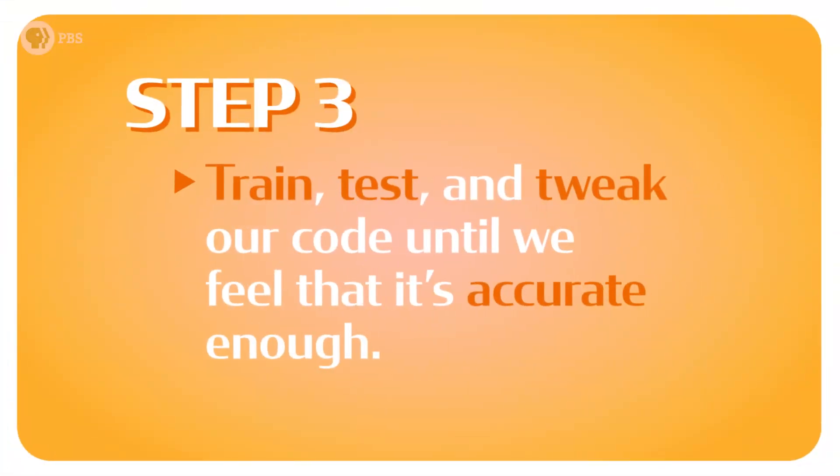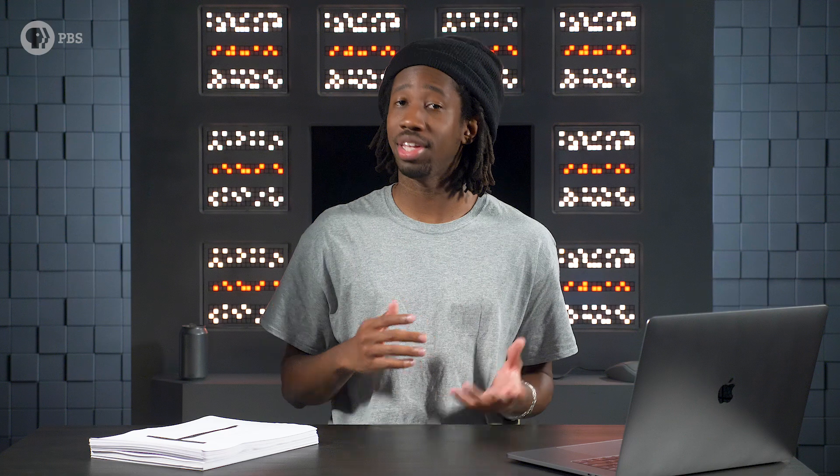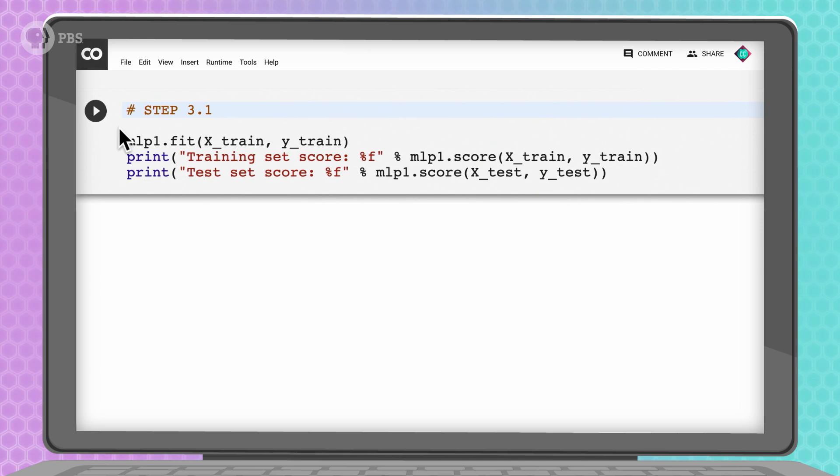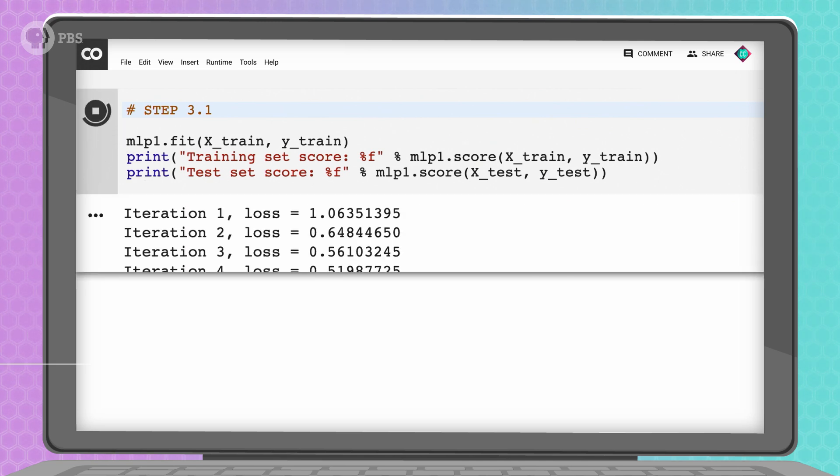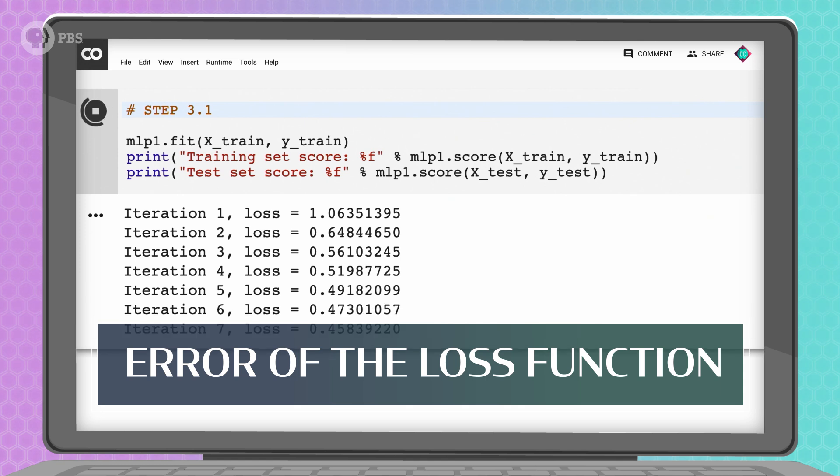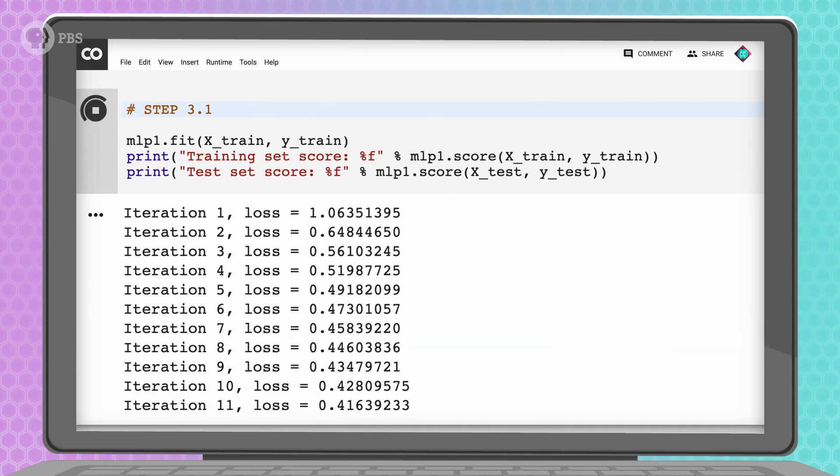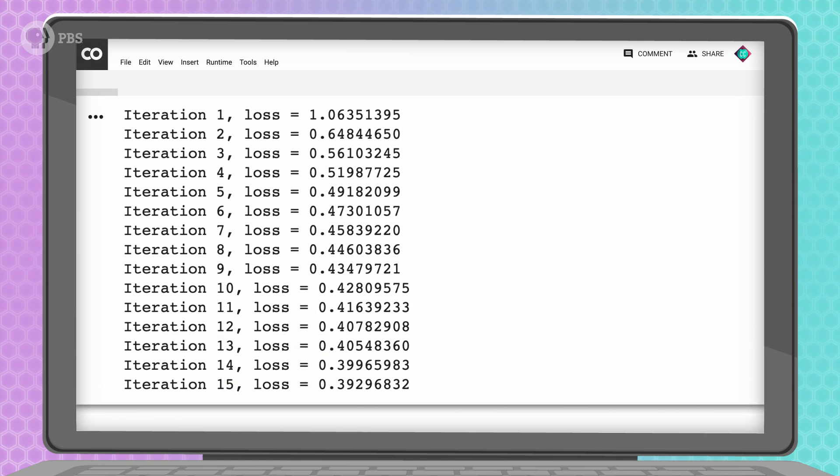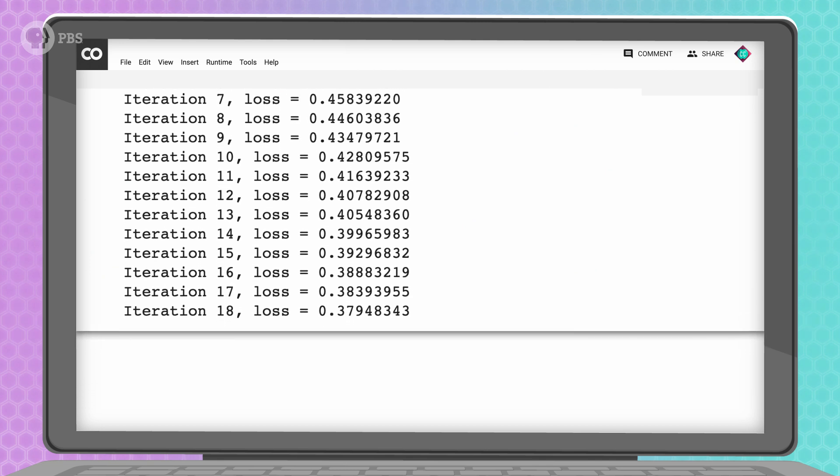Step 3. Next, we want to actually train our network over those 20 epochs and see how well it guesses the letters in the training and testing datasets with this one line of code in step 3.1. For every epoch, our program prints a number called the error of the loss function. This basically represents how wrong the network was overall. We want to see this number going down with each epoch.